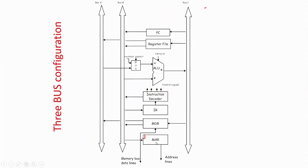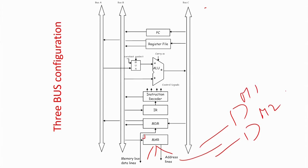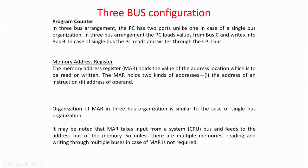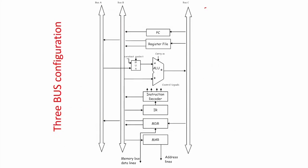For the memory address register, it takes a value from bus B and writes it to the memory. With a single memory block, multiple output ports from MAR will not help, so we have a single port that takes the address from bus B and feeds it to the memory address lines. Memory address register is similar and does not require any change compared to single bus architecture.